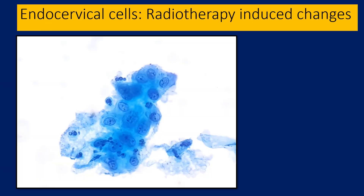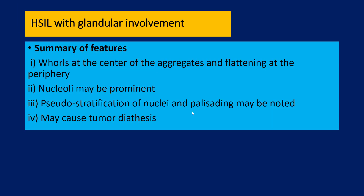Endocervical cells following repair into radiotherapy can look pretty nasty. As in this case, there is enlargement of the nucleus and the cytoplasm at the same time, with very prominent nucleoli, and they look pretty ugly. But once you know that there is a history of ionizing radiation, you can attribute the changes to the therapy and not to any epithelial abnormality.